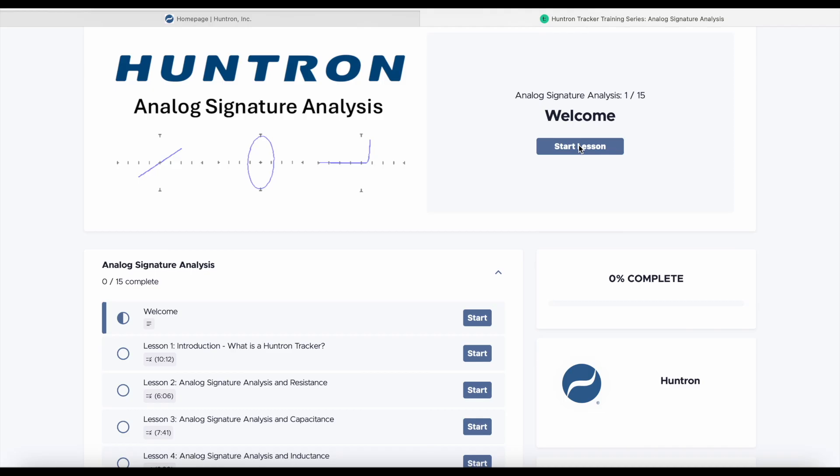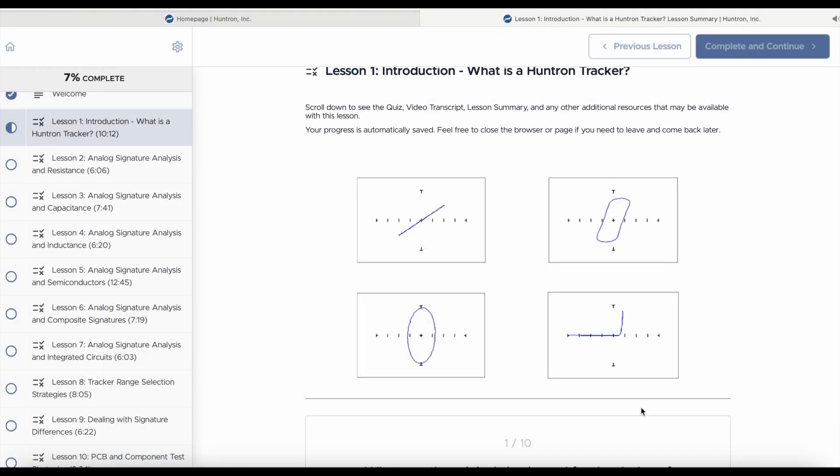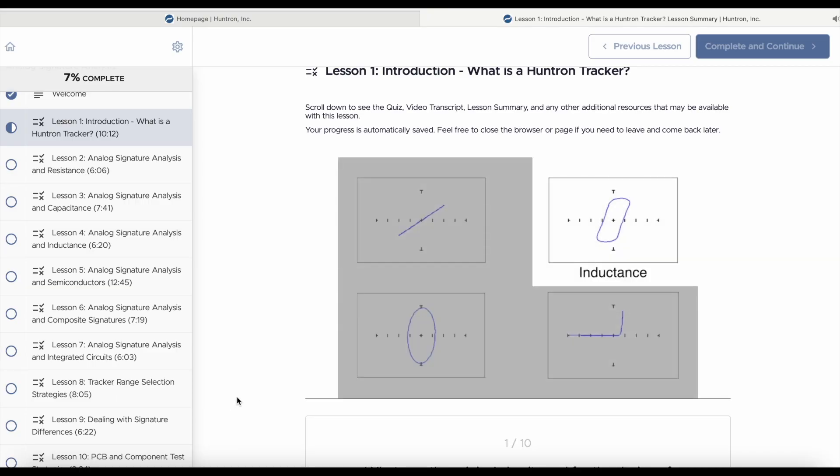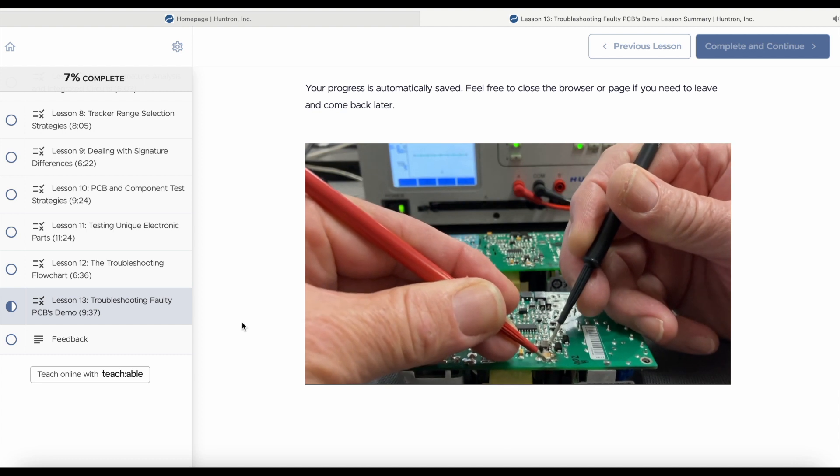The lessons then dive into the four basic analog signatures of resistance, capacitance, inductance, and semiconductance, and look at why each signature looks the way it does. This basic information is then applied in later lessons covering more complex uses of ASA.